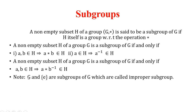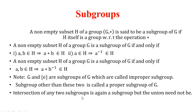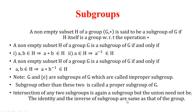Every group has at least two subgroups: the group itself and the set containing only the identity element — these are called improper subgroups. Any other subgroup is called a proper subgroup. The intersection of any two subgroups is again a subgroup, but the union need not be. The identity and inverse elements of a subgroup are the same as those of the group.